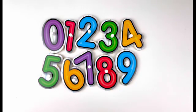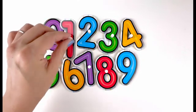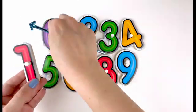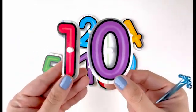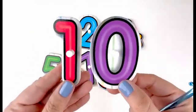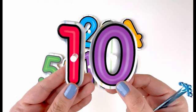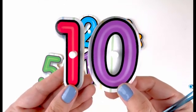Number ten. Number ten is made of one and zero. Ten. That's how we make number ten.